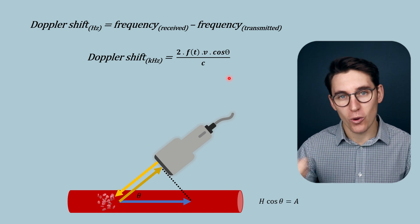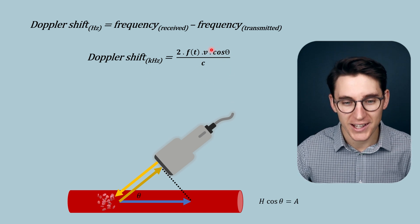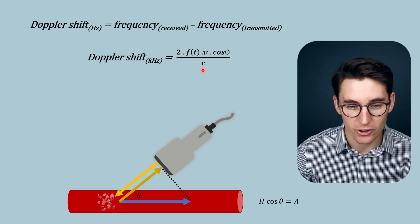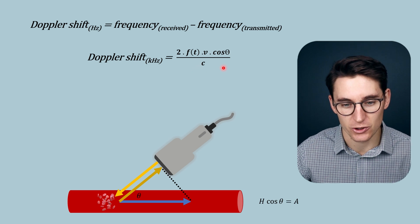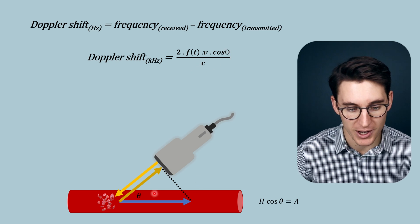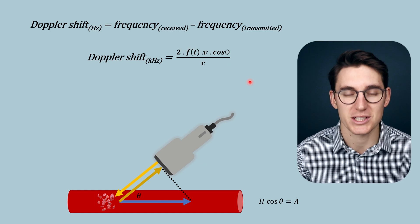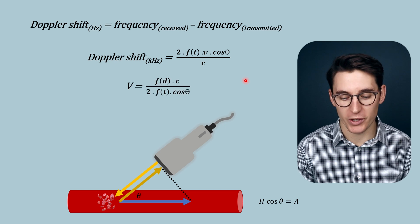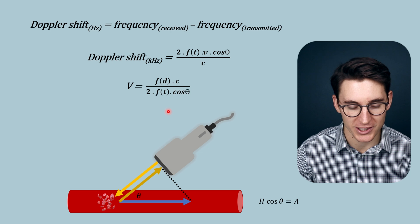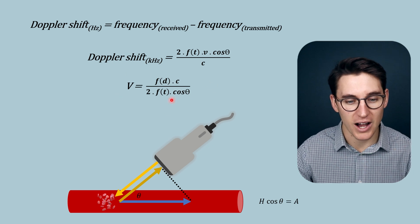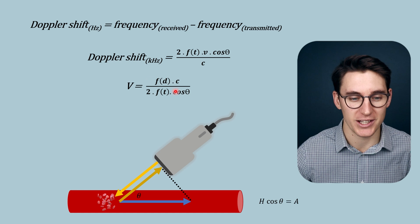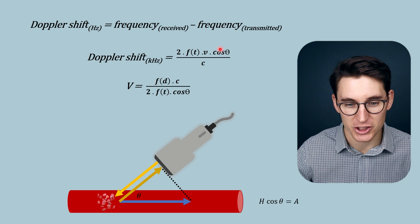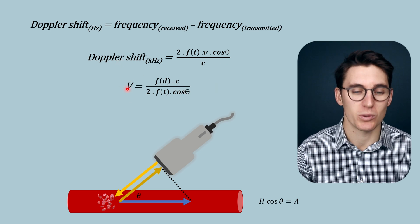What we are trying to calculate in Doppler ultrasound is the velocity — this is our unknown. The machine calculates the Doppler shift; we know the speed of sound within tissue, the angle of incidence programmed into our ultrasound image, and the frequency of our transducer. We rearrange this equation to have velocity as the variable. In exams, you likely won't be asked to calculate the velocity of blood flow, but you need to understand the relationships between these variables and the Doppler shift as well as velocity.